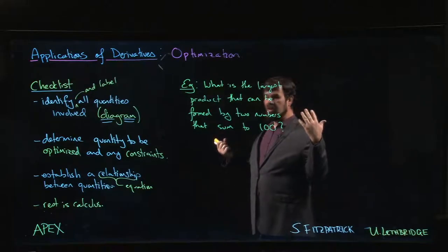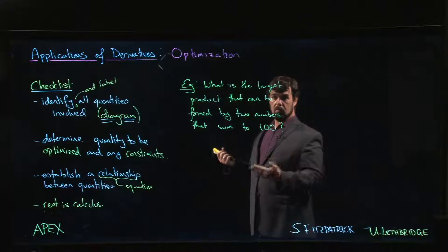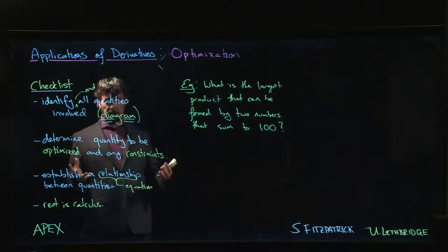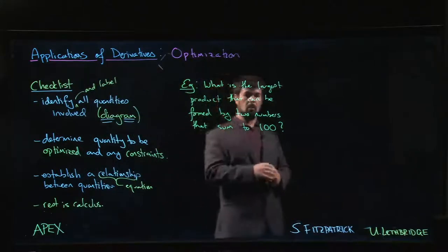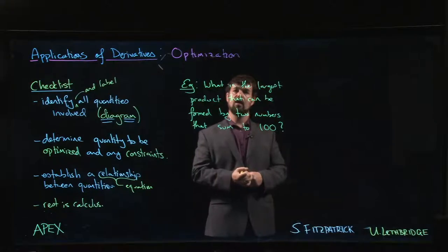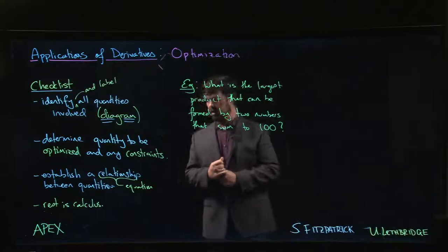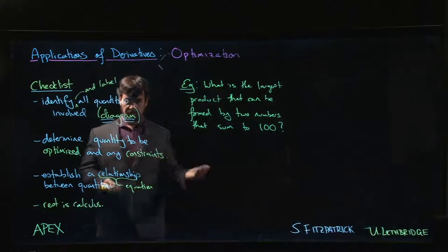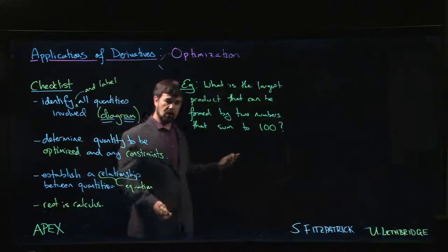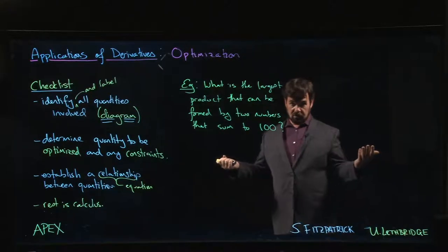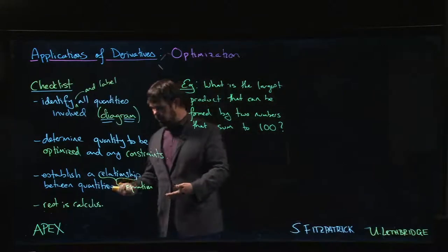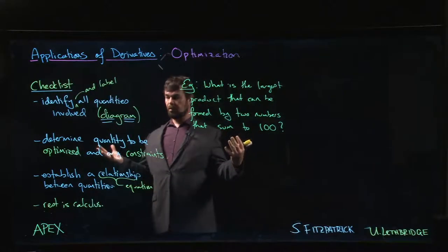In this problem we have two numbers that must sum to 100, and we want to find the largest possible product. There are two scenarios that arise: you might have two or more quantities related in some way — here, they sum to 100 — or a direct functional relationship like cost or revenue as a function of price. If it's a straightforward functional relationship, it's an extreme value problem and we know exactly how to solve that from the previous chapter.